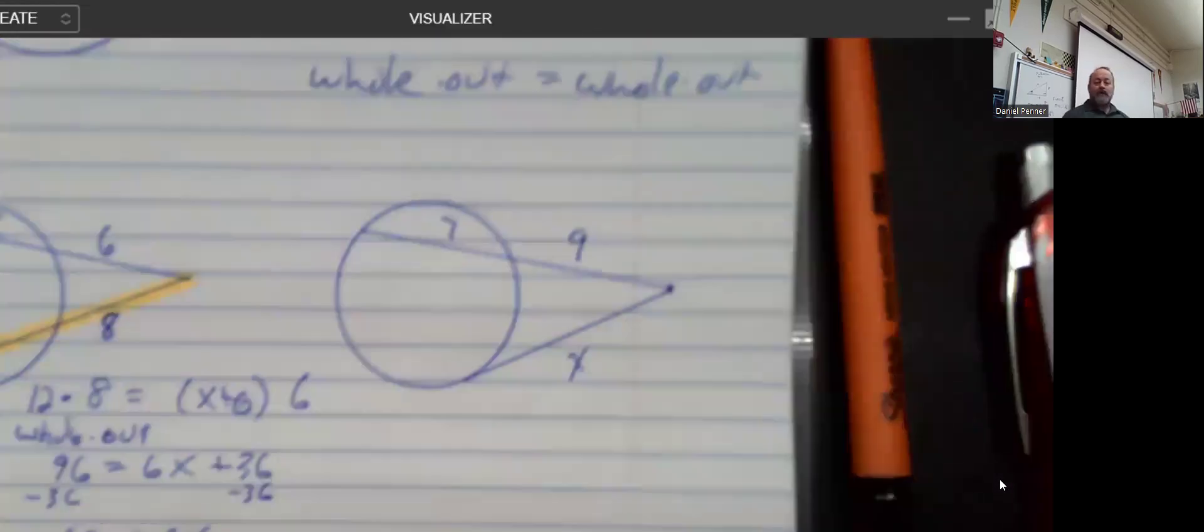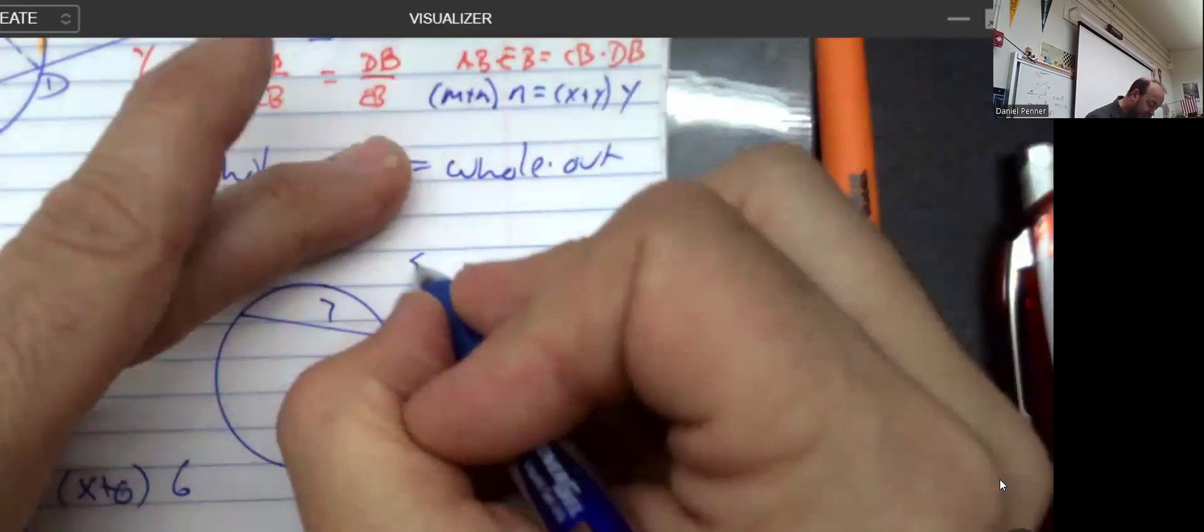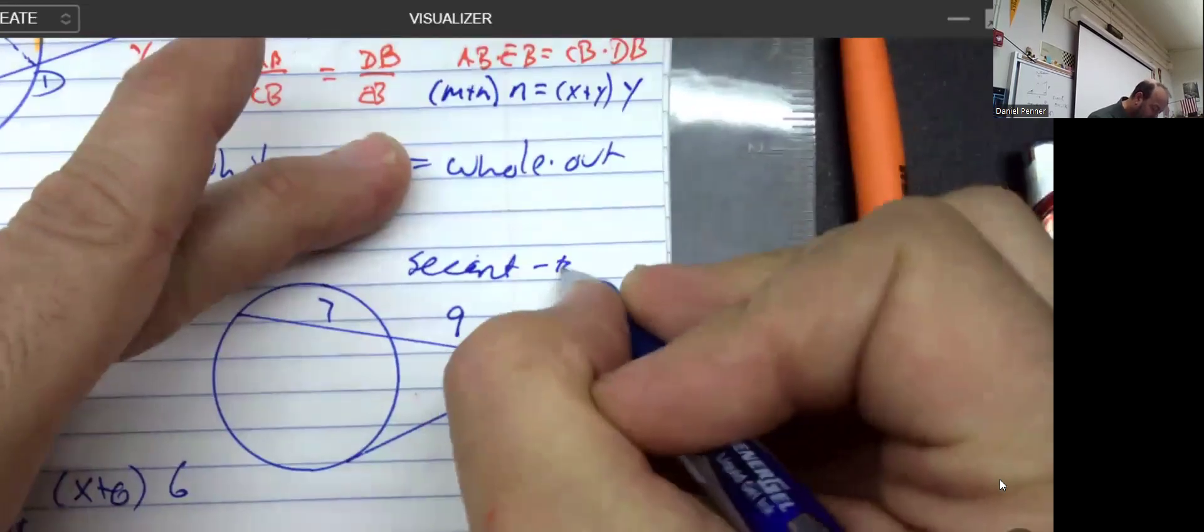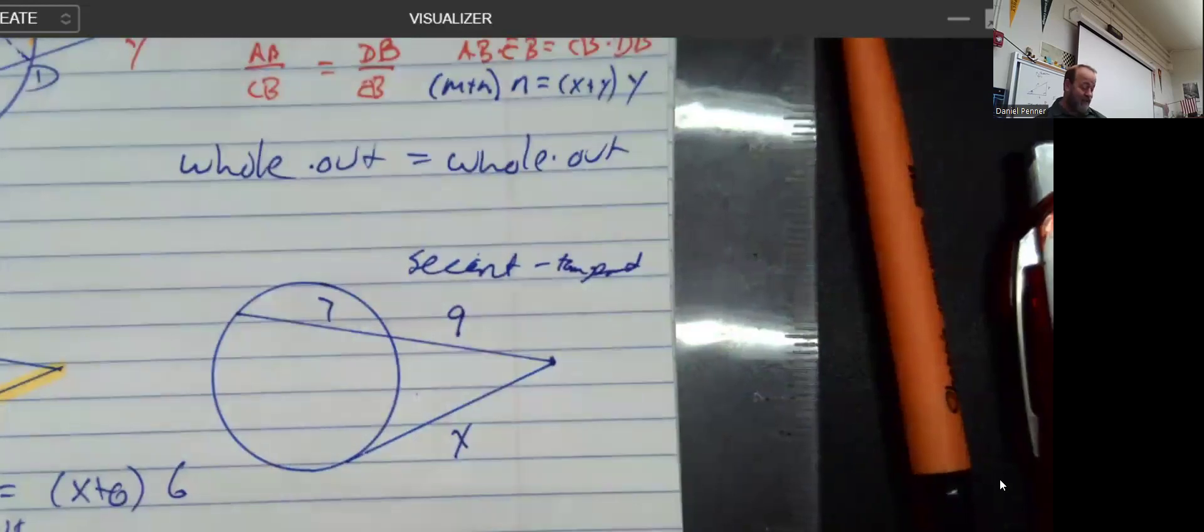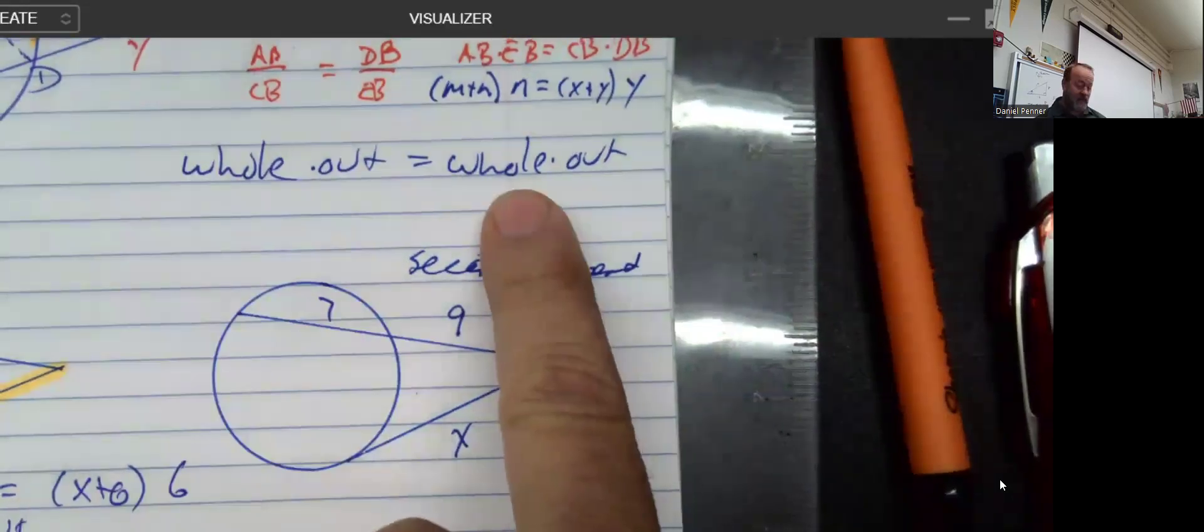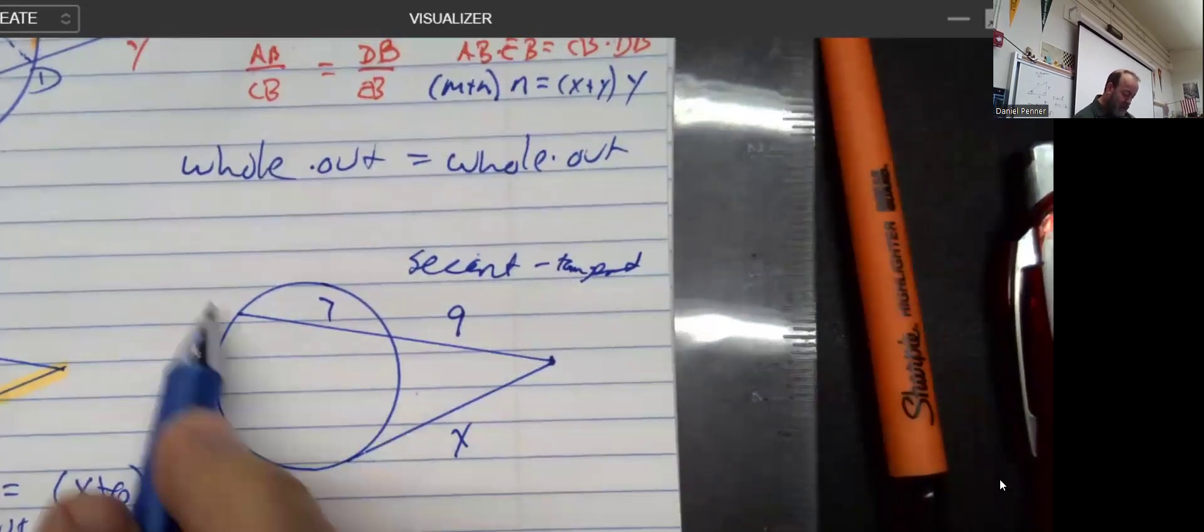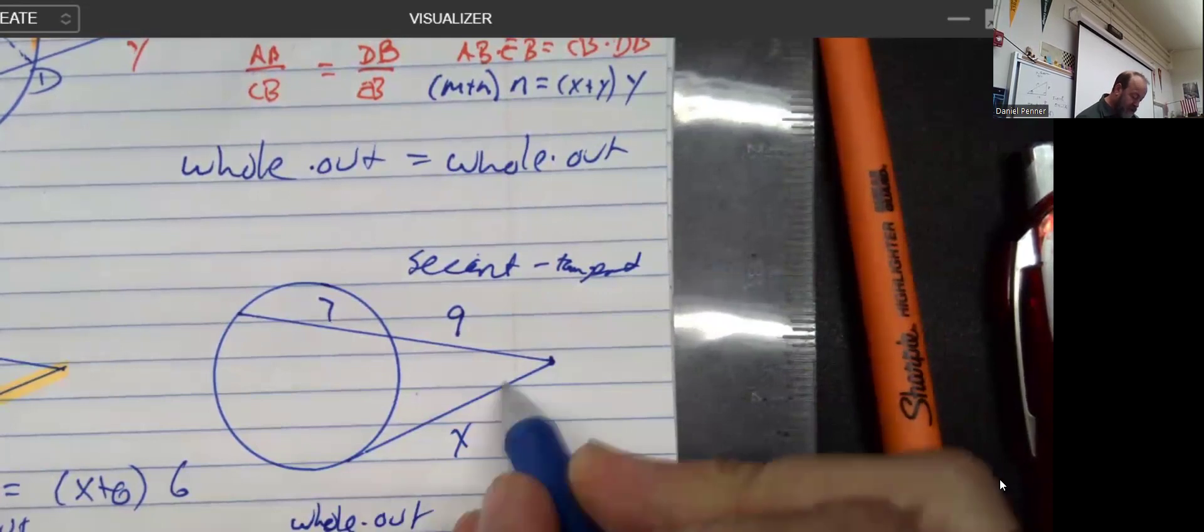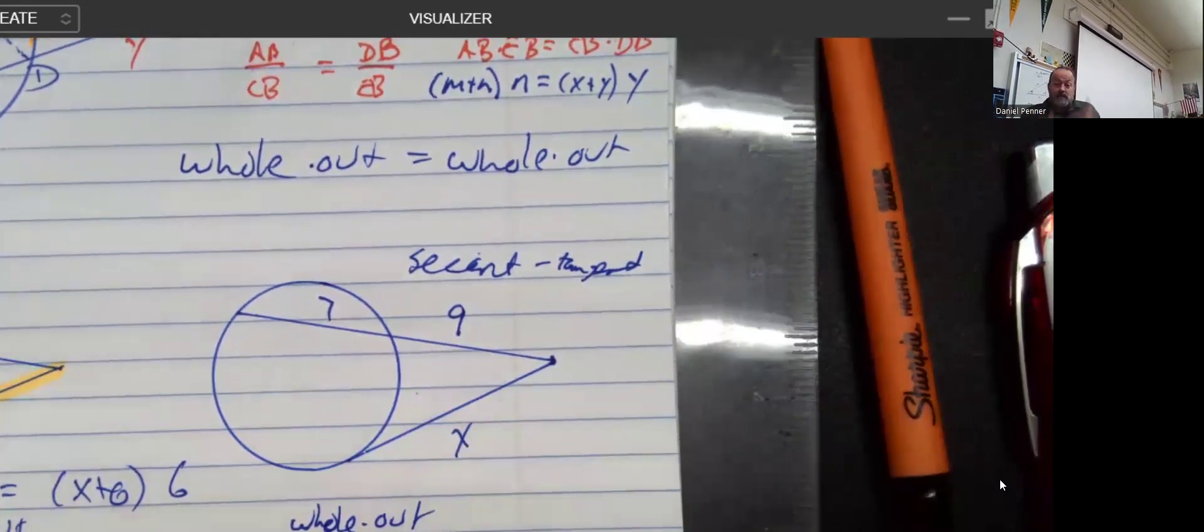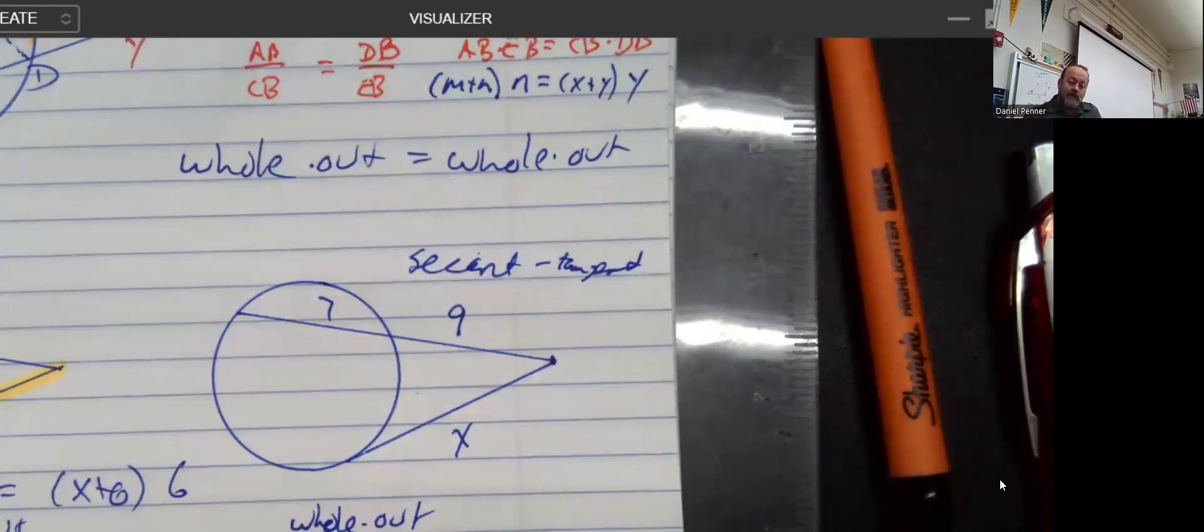Now, over here, this is going to look a little bit different because this is really a secant and a tangent. And there is technically a totally different proof, but it turns out it's the same exact relationship. So when we look at this thing, we say the whole thing, 16, times the outside, whole times out, which is 9, is equal to the whole thing, which is X, times the outside, which is actually also X, because the whole thing is outside, right? It's a tangent, so it never enters the circle. So there's never that inside portion.